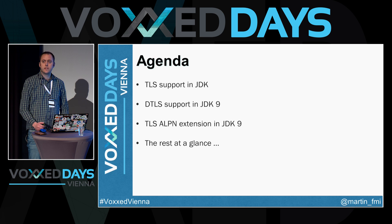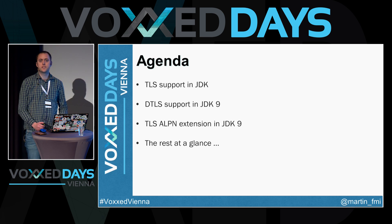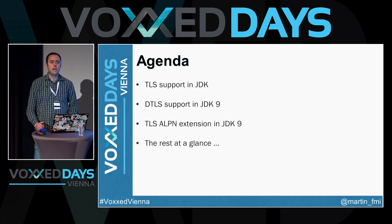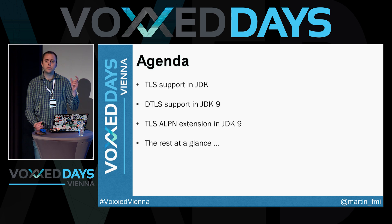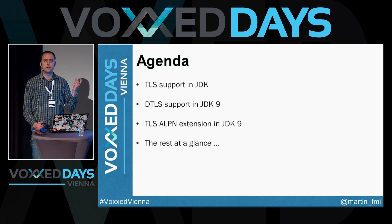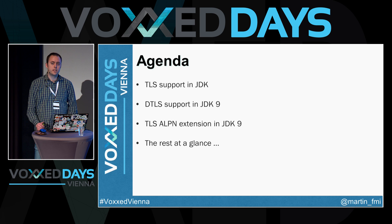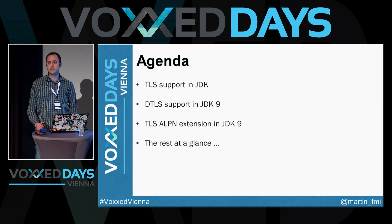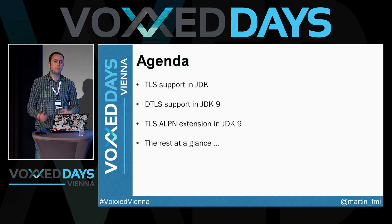Java 9's major introduction is the Jigsaw module system. One nice thing is that it doesn't affect the security sandbox model — we can still use the security manager with permission checking from Java 1.2 applied to Jigsaw modules without change. New in Java 9 is the ability to specify concrete permissions per Jigsaw module with a new syntax extending the security policy file. Jigsaw also lets you build a smaller JDK from only the modules you need, improving overall security.